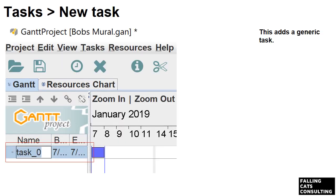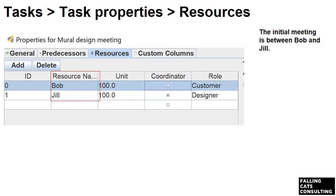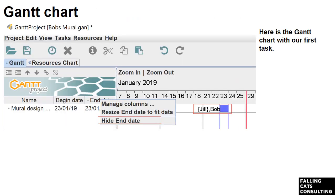Now we can add our first task. The menu option adds a generic task, as you can see. We can then go into the task properties to set up the task details. Here, we're adding the first task, which is the design meeting between Bob and Jill. Because it's the first task, we will give it a begin date and it will have no predecessors. We're also leaving the default duration as one day, although you can use percentages of days if you need to. In the task resources tab, I've added Bob and Jill. Note that Jill is marked as the coordinator — this shows her in curly brackets in the Gantt chart. We've left the default unit as 100%, meaning they're working the whole day on the task. So here is the Gantt chart with our first task. See how Jill is marked as the coordinator of the task.